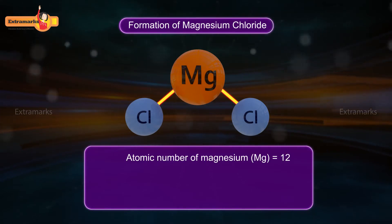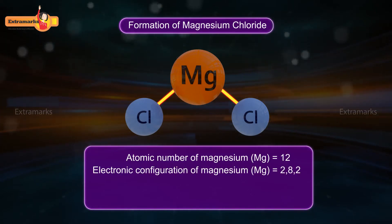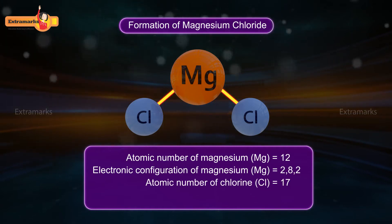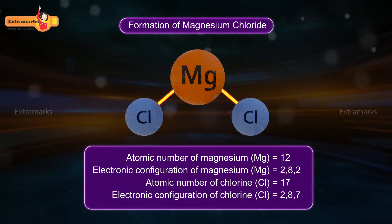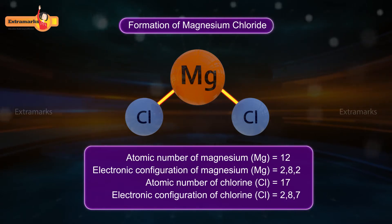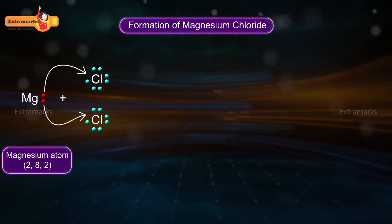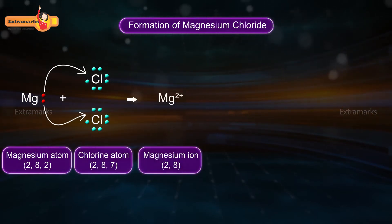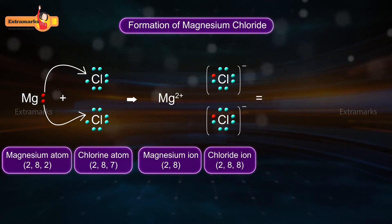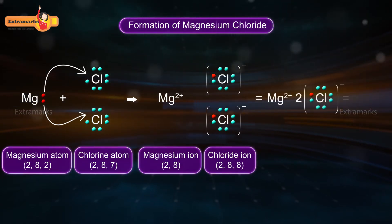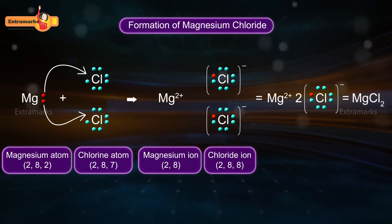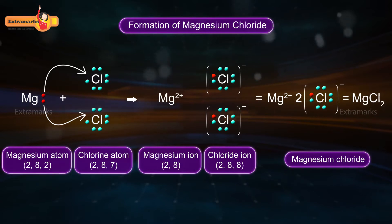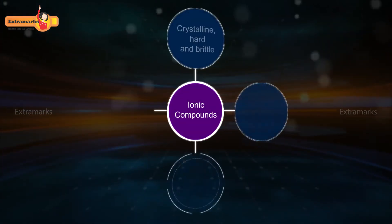The atomic number of magnesium is 12 and its electronic configuration is 2, 8, 2. The atomic number of chlorine is 17 and its electronic configuration is 2, 8, 7. Magnesium atom transfers its two valence electrons to two chlorine atoms, one each, to form a magnesium ion and two chloride ions. After the donation of electrons from the magnesium atom to the chlorine atoms, the ionic bond is formed between the magnesium ion and chloride ions.